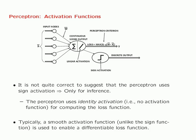Let's revisit the perceptron. The sign activation is used only for inference; however, when constructing the loss function, you don't use any activation — that is called the identity activation. Activation functions like the sign function are not very useful for constructing loss functions because they are discrete with sudden jumps. Such activation functions are non-differentiable, and you cannot create a differentiable loss function, which you need for neural network training.